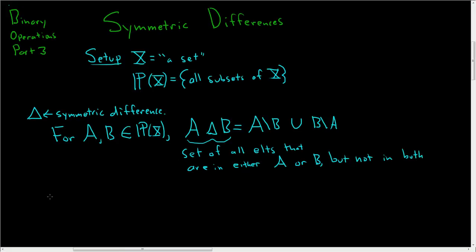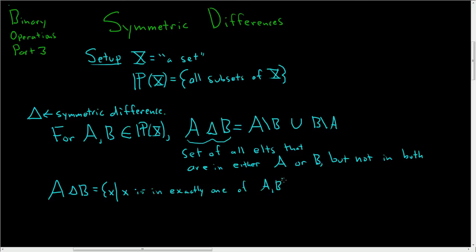If you write the symmetric difference of A with B in set builder notation, this is a set of all X such that X is in exactly one of A, B. Very, very useful to think of it this way — X is in exactly one of A, B.